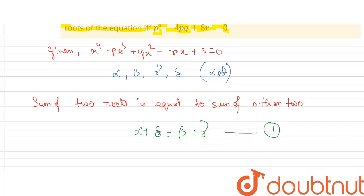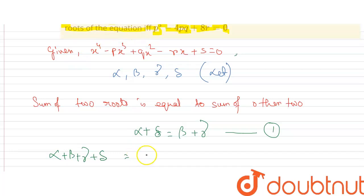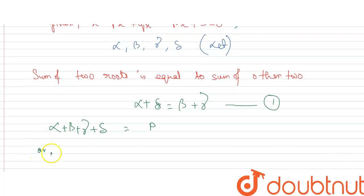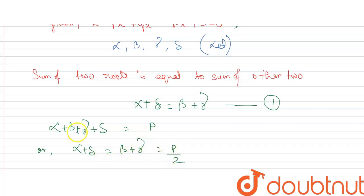This is our equation 1. According to the general form of a bi-quadratic equation, if we compare, we can get the sum of the four roots: alpha plus beta plus gamma plus delta equals p. We know that alpha plus delta equals beta plus gamma.